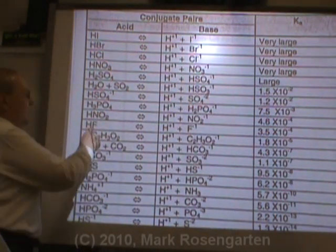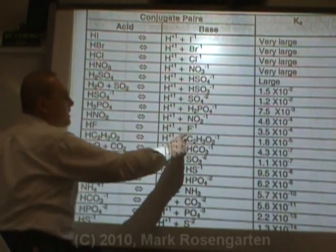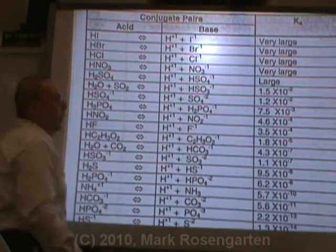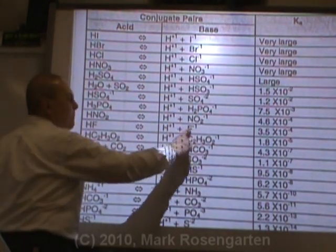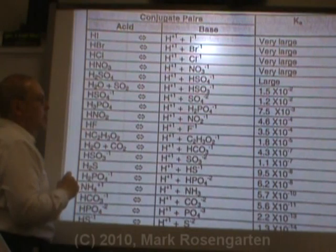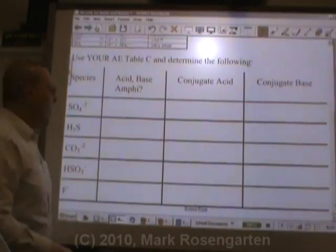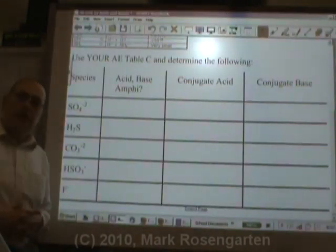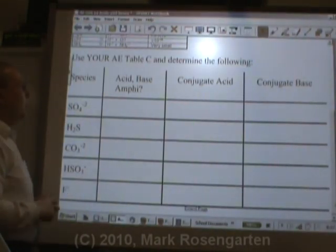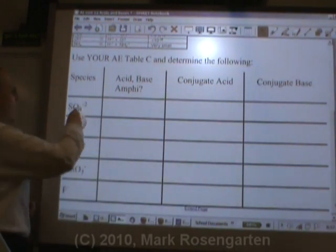When HF loses a hydrogen, it forms its conjugate base F-. When F- picks up a hydrogen, it forms the conjugate acid HF. Now let's sum it up and figure out what things are acids, bases, or amphiprotic.